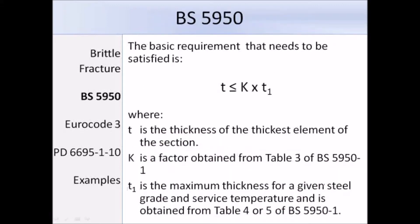According to BS 5950 Part 1, the basic requirement that needs to be satisfied is T must be less than K times T1. T is the thickness of the thickest element of the section, so that's usually the flange. K is a factor obtained from Table 3 of BS 5950 Part 1, and it depends on the stress level, detailing, and the strain rate. T1 is obtained from Table 4 of BS 5950, and it's the maximum thickness for a given steel grade and service temperature.